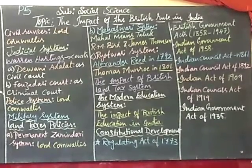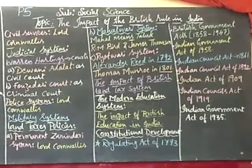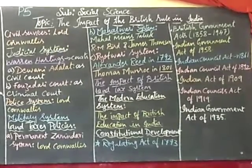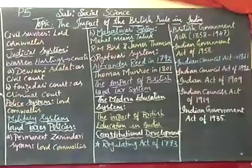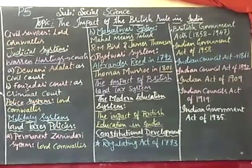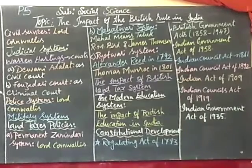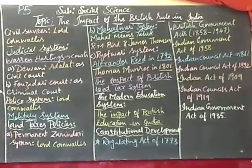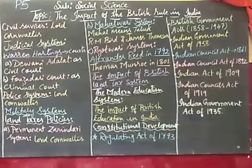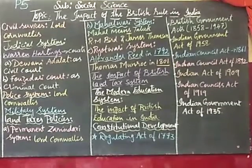The next act is the Charter Act of 1833. In 1813, we studied about the license, the Board of Directors having power to remove and appoint the Governor General, and the missionary education schools. In 1833, once again a license was given by the English East India Company to remain in India for another 20 years.